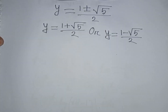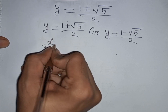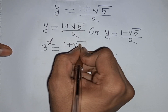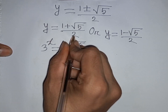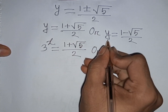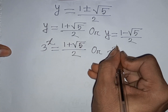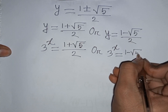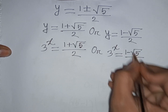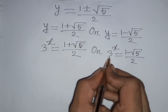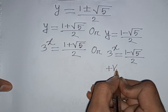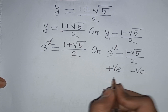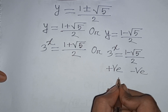So 3^x equals (1 plus square root of 5) divided by 2, or 3^x equals (1 minus square root of 5) divided by 2. We note that 3 raised to any power is always positive, but (1 minus square root of 5) divided by 2 is negative. So a positive value cannot equal a negative value — this case is rejected.